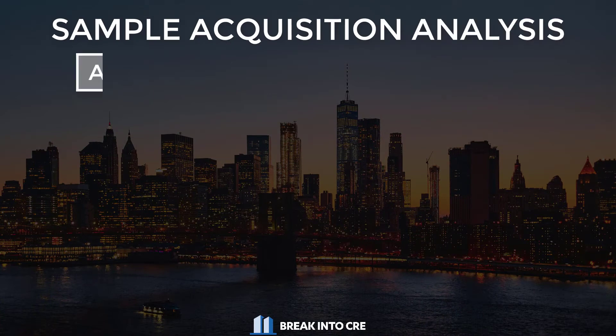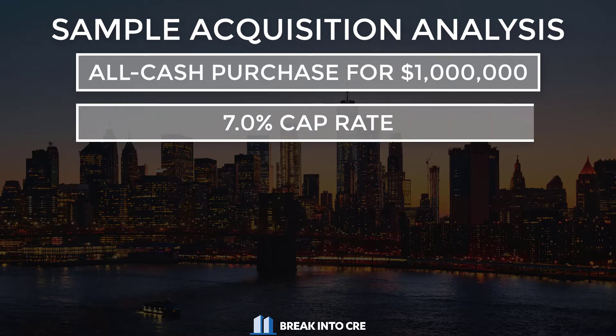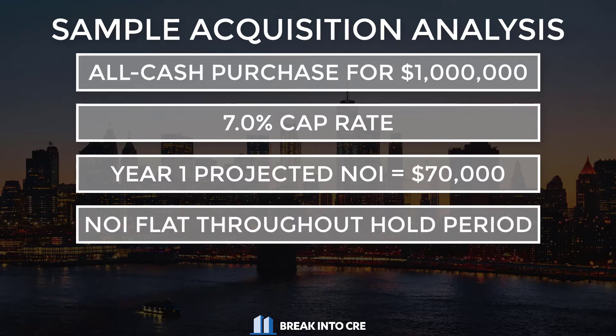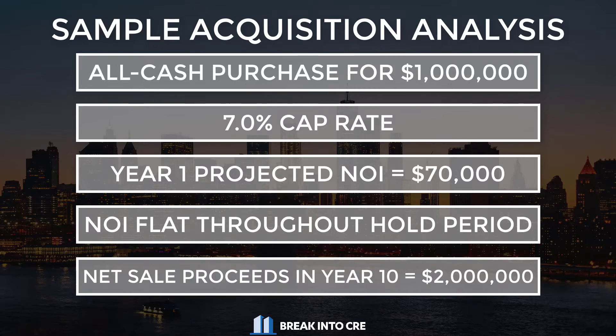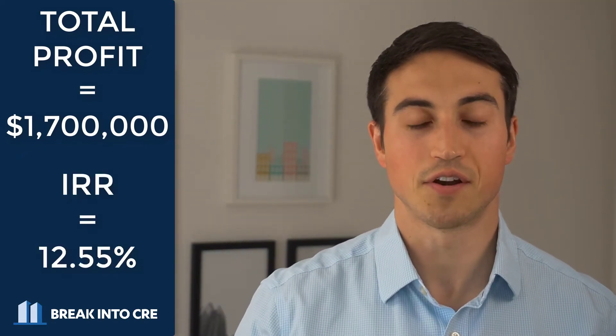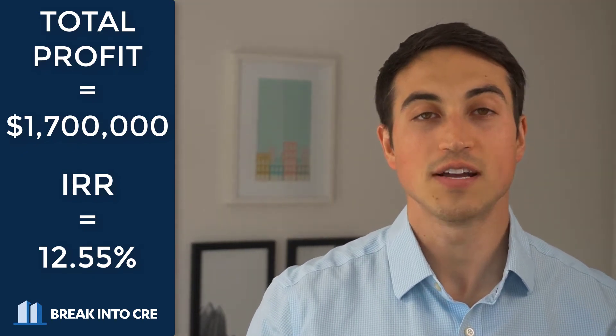In a real estate example, cash flows earned earlier in your investment period are worth more than those same cash flows later on. Say you're analyzing a property and spend $1 million cash to acquire it at a 7% cap rate, meaning net operating income in year one is $70,000, staying flat throughout ownership. If you sell at the end of year 10 for $2 million in net proceeds, your total net profit is $1.7 million and your IRR comes out to 12.55%.